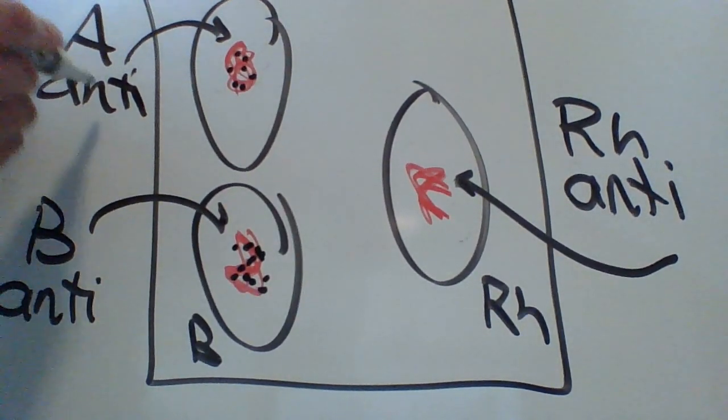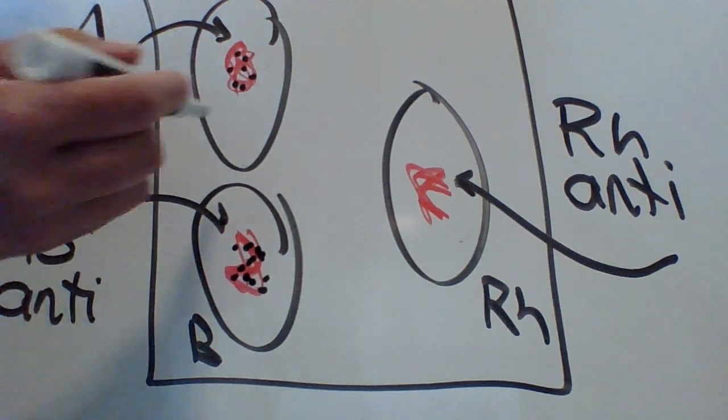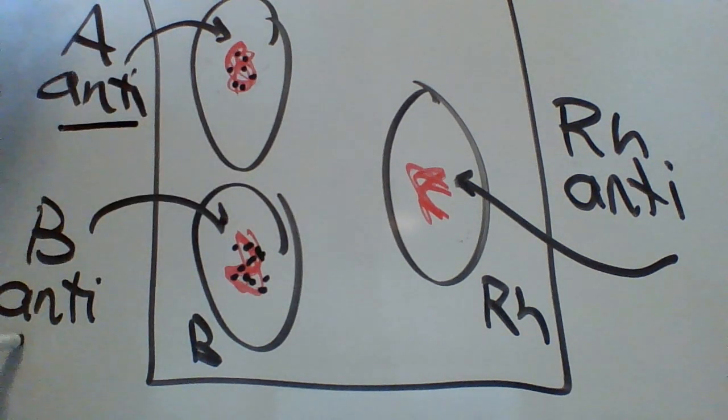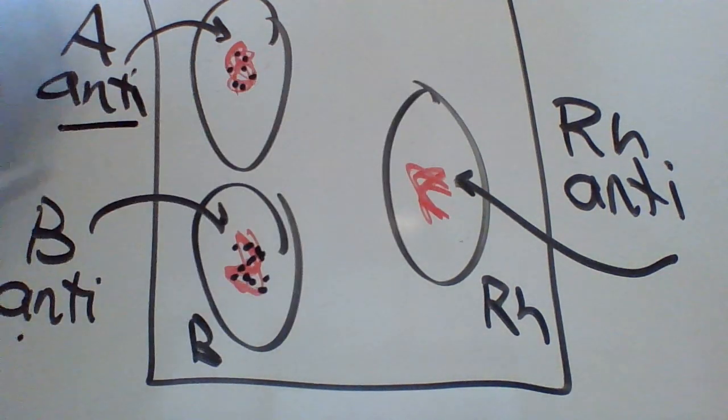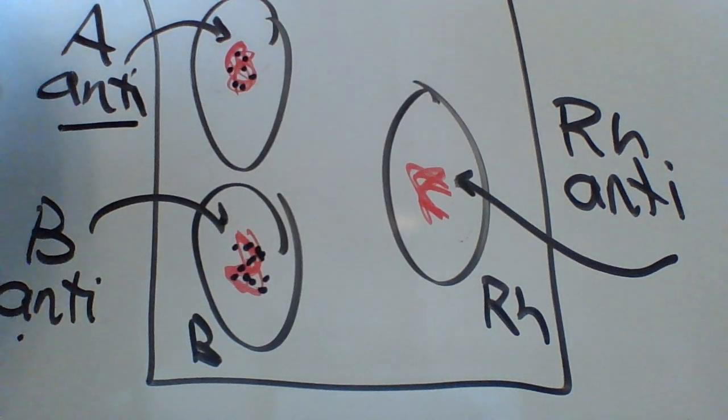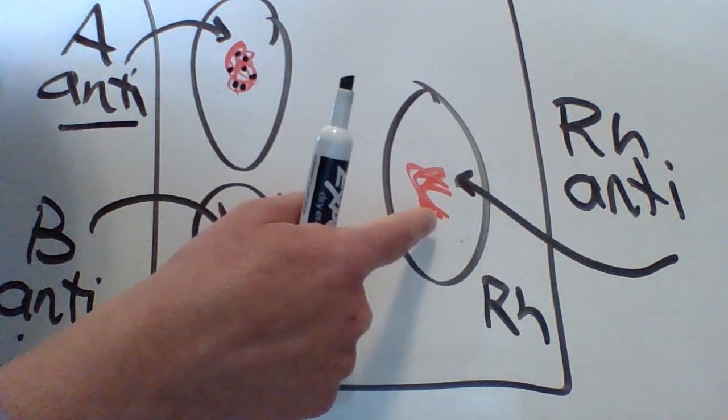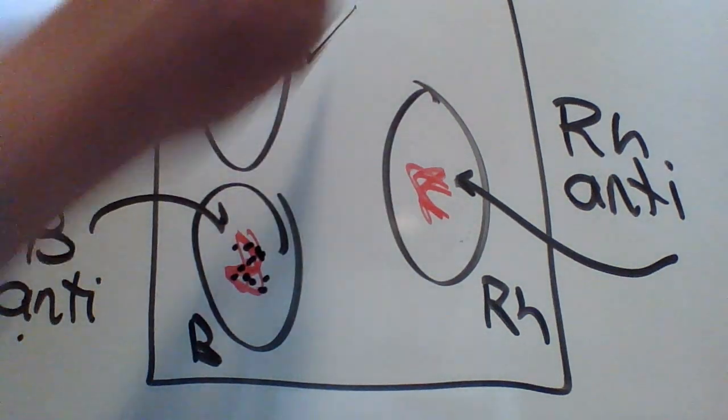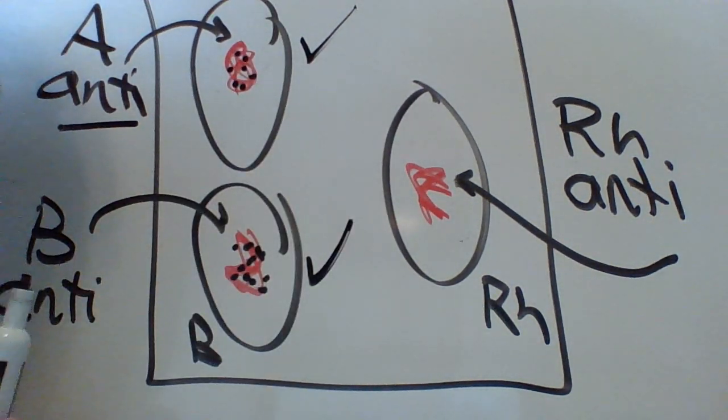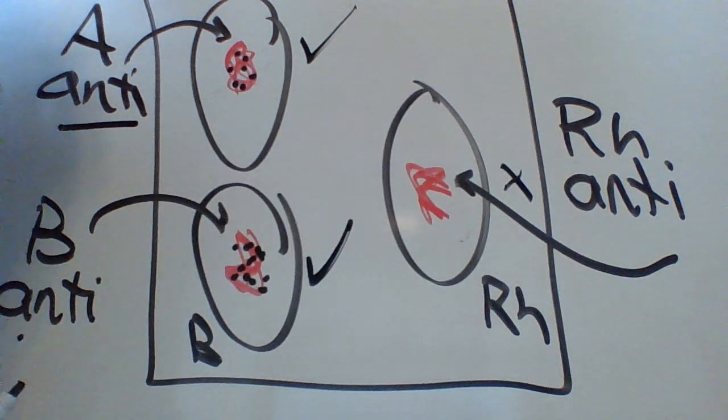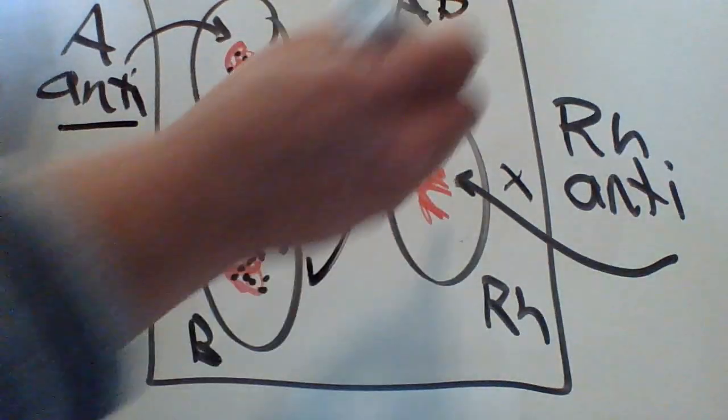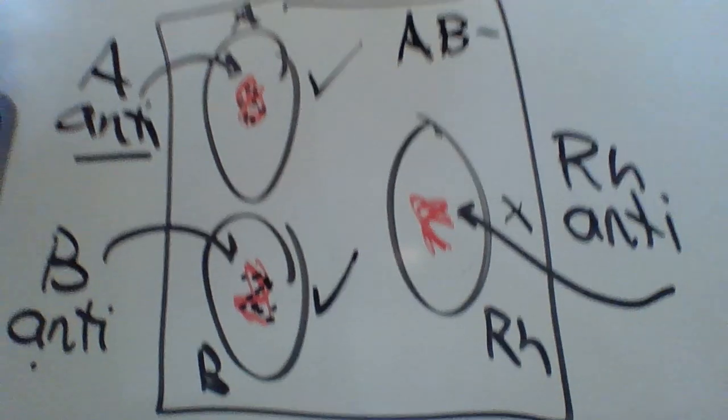So what that means is that our A antibody actually found A antigens. So A antigens are present in this blood type. Our B antibody found the B antigens. So there's B, but our RH antibodies didn't clot, which means that there are no RH antigens in this person's blood. So this person would have A antigens. They would have B antigens, but they would not have RH antigens, which means this person would be AB negative.